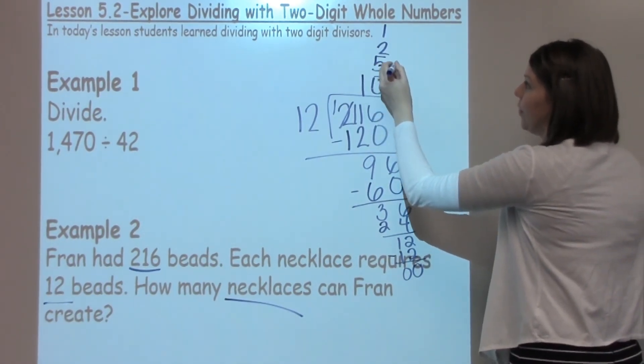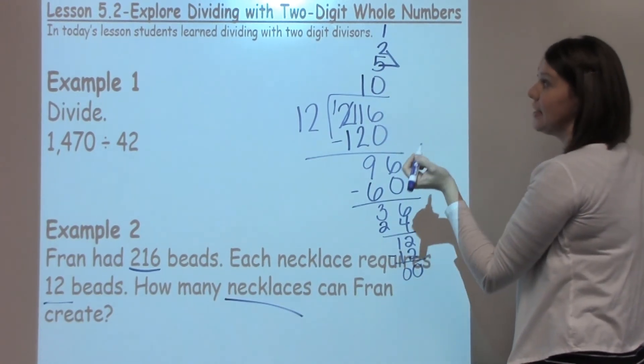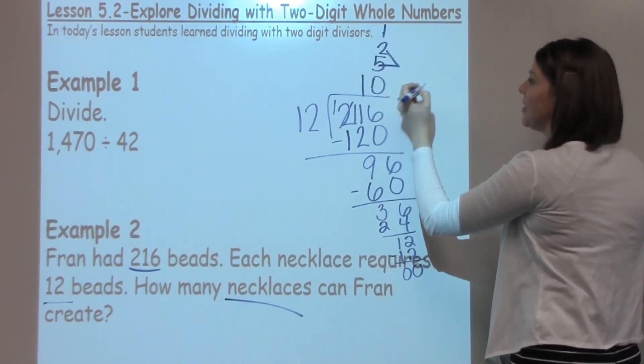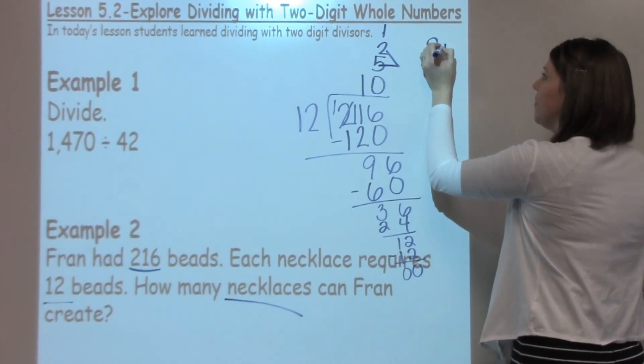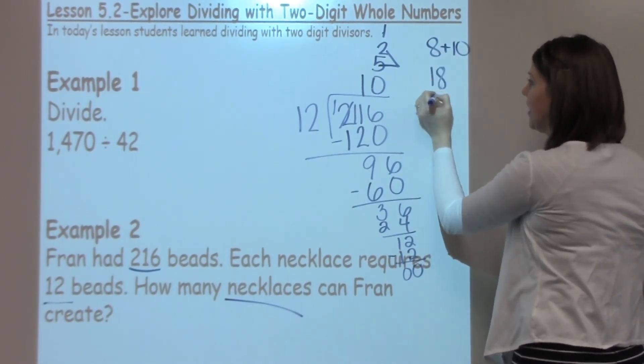So in this case, what I'm going to do is I'm going to take my 2 plus my 5, which is 7, plus 1 more is 8. So I know I've got 8 plus 10. 8 plus 10 is 18.